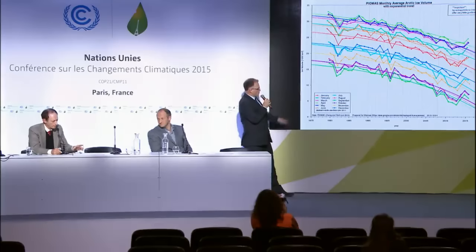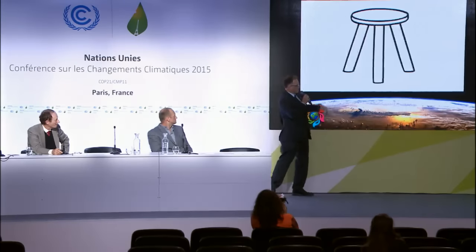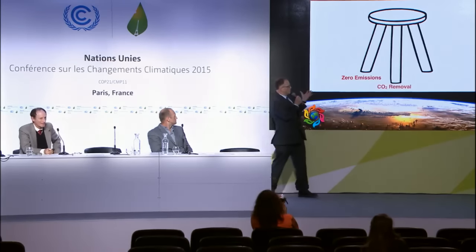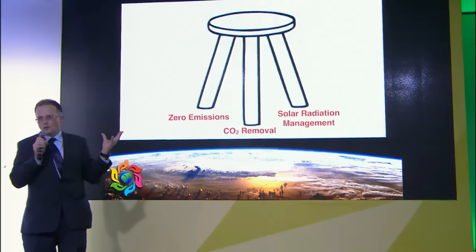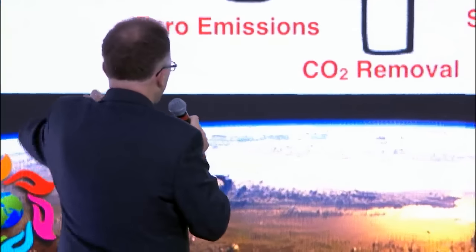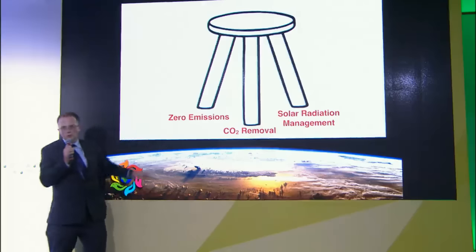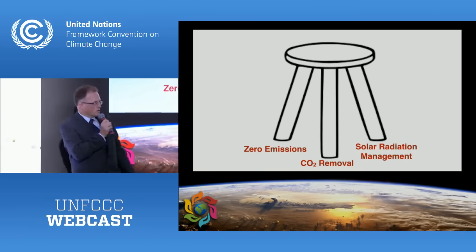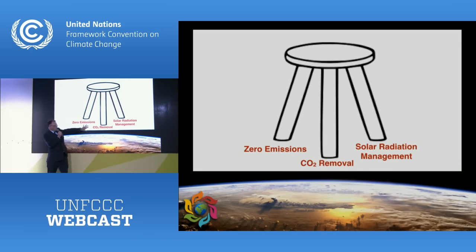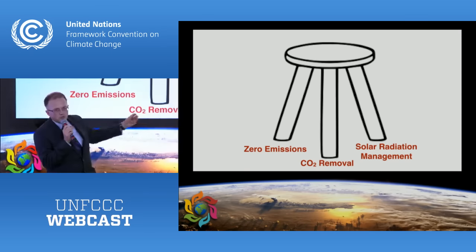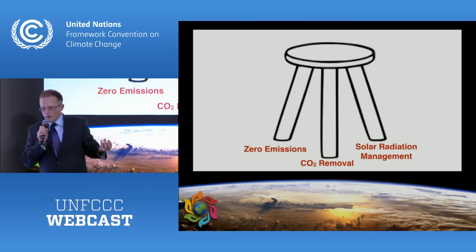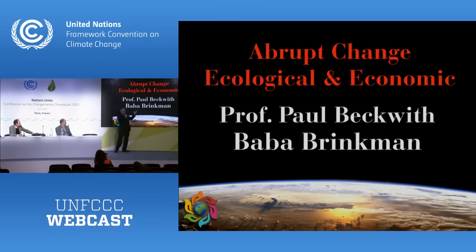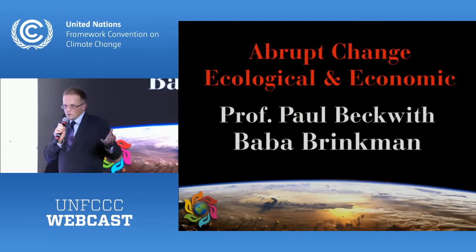Sea ice is decreasing every month. The solutions, I consider a three-legged stool — we only talk about one leg at the COP. We need to zero emissions as soon as possible. To stay under 1.5 degrees, we need to zero emissions by 2030; to stay under 2 degrees, by 2050. But this isn't enough. We need CO2 removal methods, we need to do biomimicry, we need to take CO2 out of the atmosphere, and also look at solar radiation management.